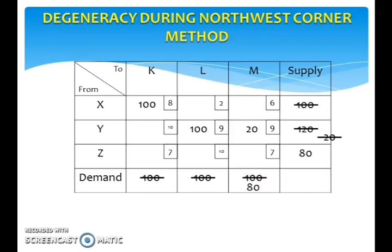Finally, move to the last square. The supply value in the corresponding row is 80 and the demand value in the corresponding column is 80, so write 80 here. Thus both supply and demand are satisfied.